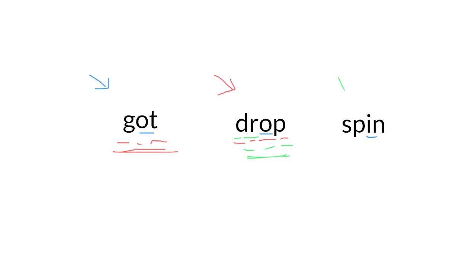Now let's read the last word. Where are the two consonants next to each other? The S and the P. So we're going to blend these two letters together: S-P-I-N. Spin. Well done everybody.